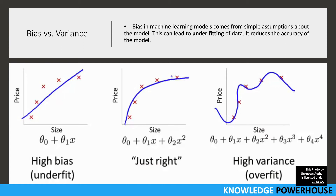Bias also reduces the accuracy of the model. For example, in this diagram, the first example on the leftmost side shows a straight line dividing the data into two sides, but that line is not fitting the data properly. Because of this, we are not able to predict things with much accuracy. That's the bias — we assumed a simple line could explain the data, but simplicity is not always correct, so we get high bias from this simple model.